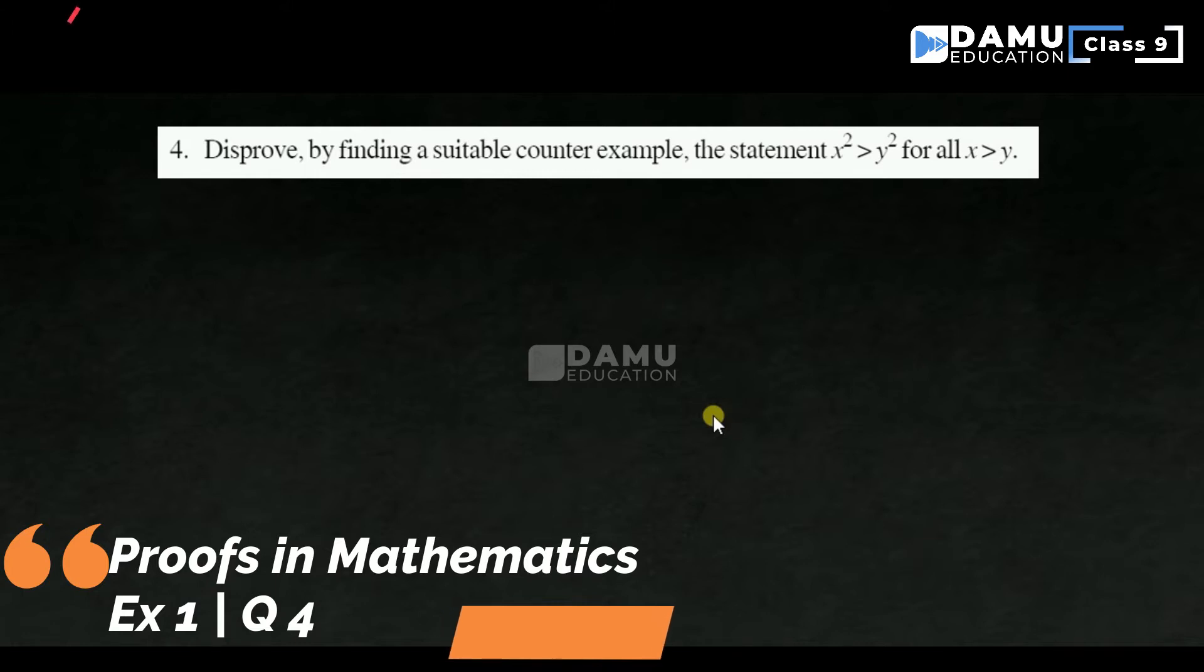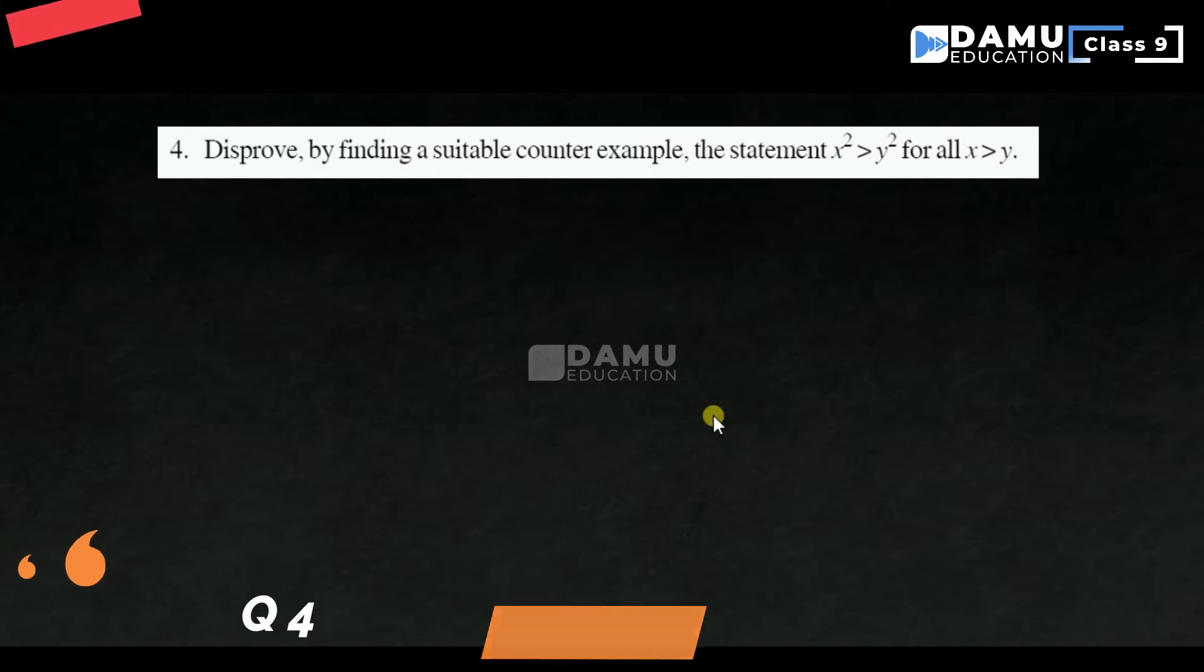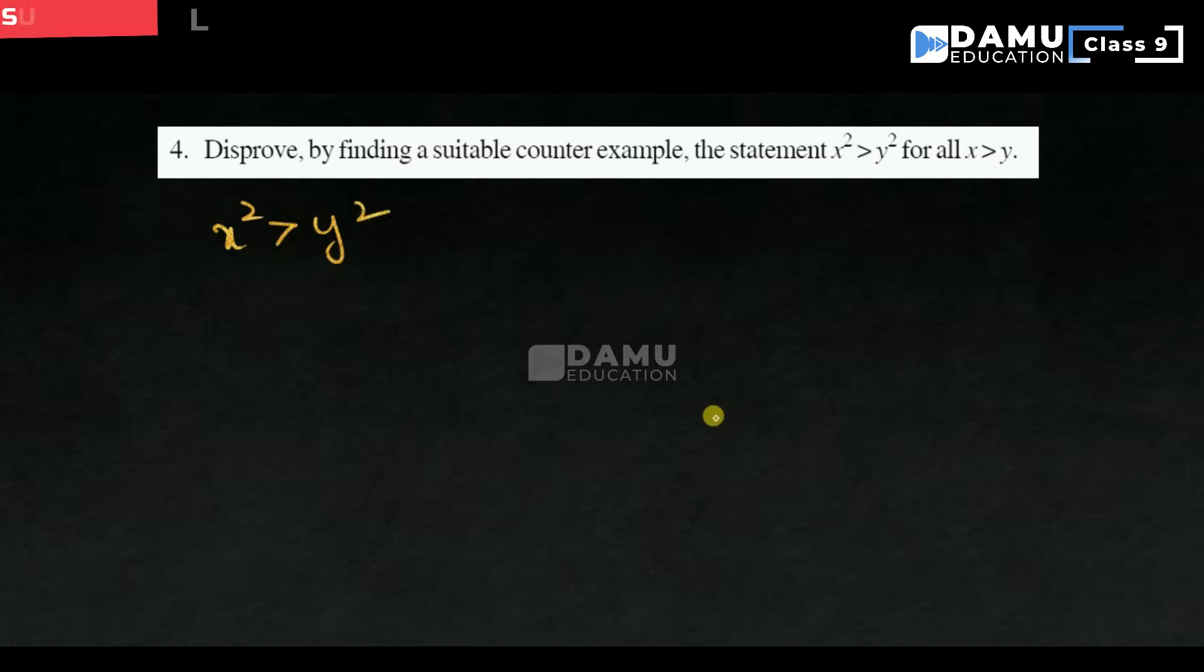In this module, we are going to discuss our fourth question: disprove by finding a suitable counter example. The statement is x square is greater than y square for all x is greater than y.